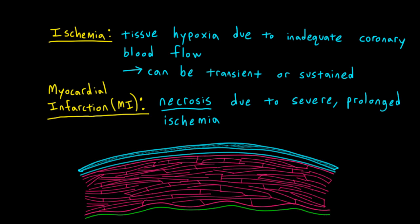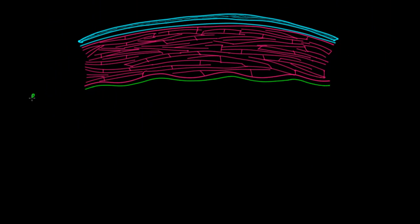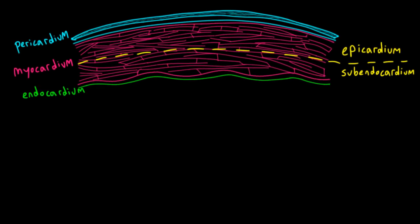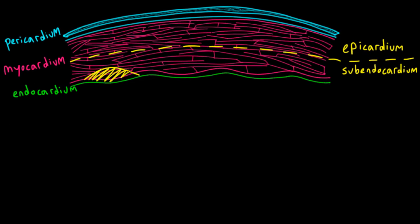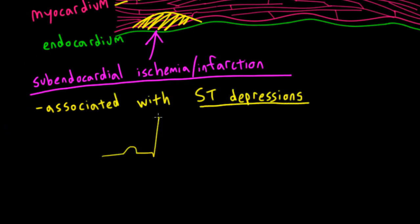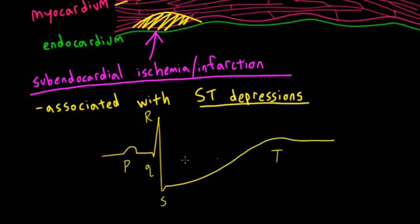Let's take a look at this simplified depiction of the layers of the ventricular wall. Here's the endocardium on the inside, the pericardium on the outside, and the muscular myocardium in between. We call the inner layer of the myocardium the subendocardium. The subendocardium is more susceptible to ischemia than the outer layer, called the epicardium. When the injury is confined to the inner layer, we call it subendocardial ischemia or subendocardial infarction. The most characteristic EKG finding is depression of the ST segment — what we call ST depression.